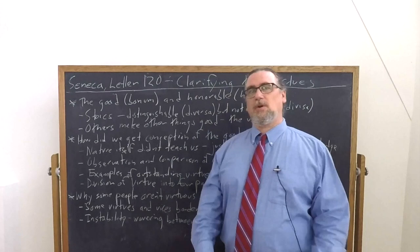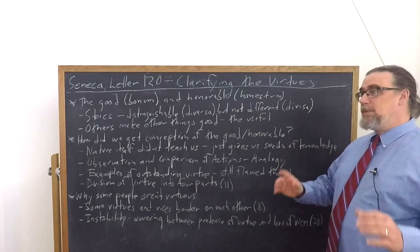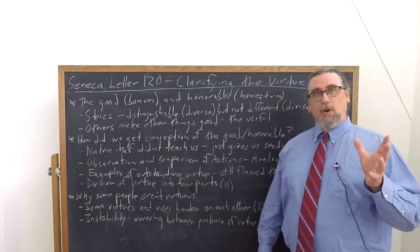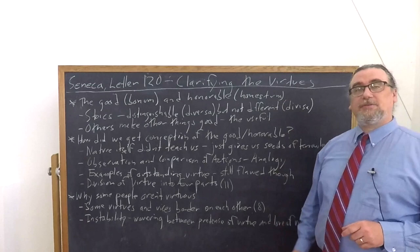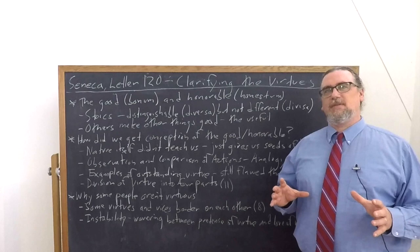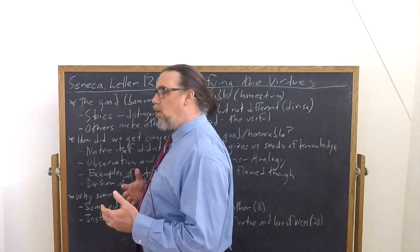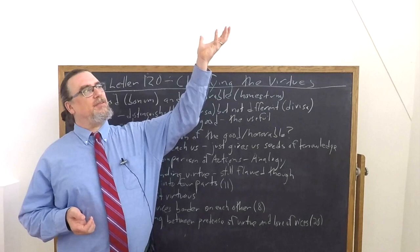He begins by talking about the good in Latin, bonum, in Greek, agathon, and the honorable honestum in Latin, the word that we get honesty from. It's not just about truth-telling. It's about what is intrinsically valuable. Honestum is a translation of what the Greek philosophers called the kalon, which is a term that could be used for the beautiful, or the fine, or the noble, the honorable, what it is that we see as good in a robust sense, something that has intrinsic value and that we recognize as such.